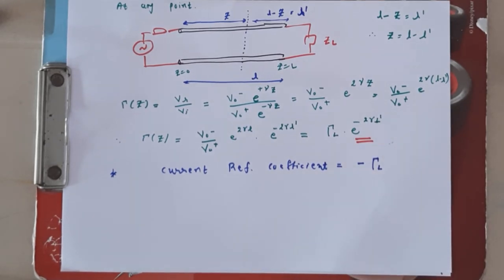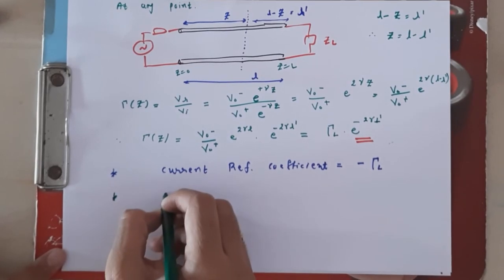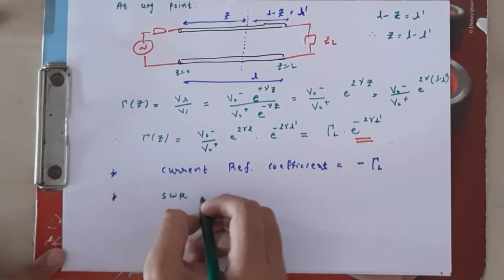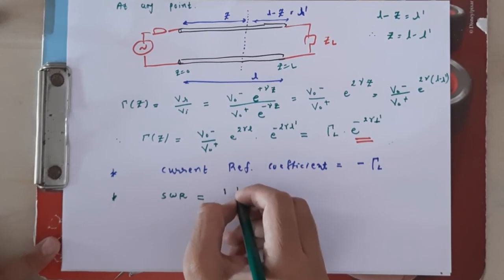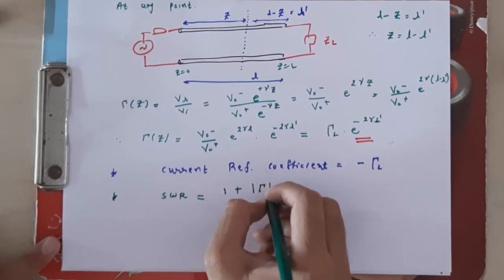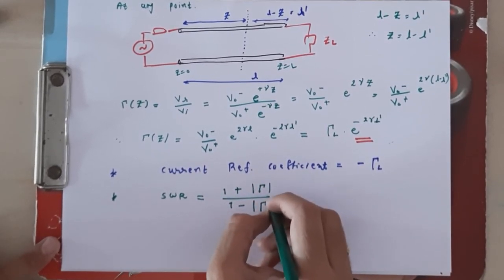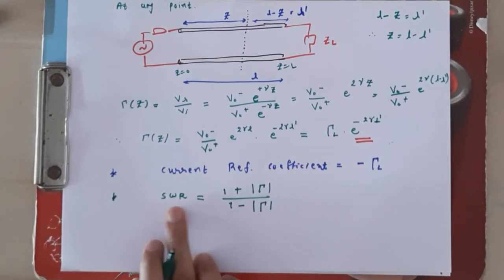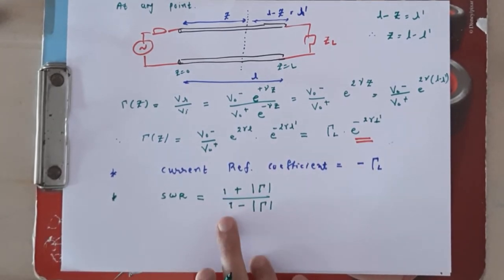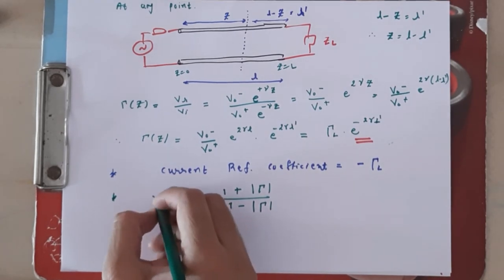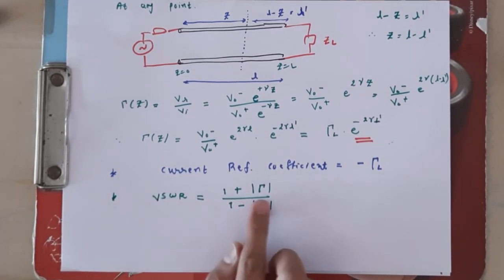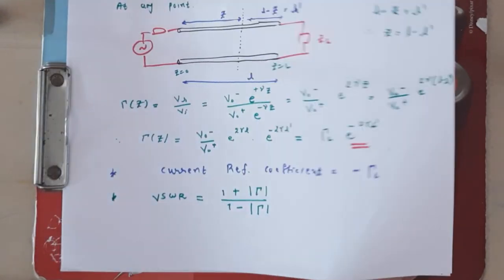Next is the standing wave ratio (SWR). We have already discussed this in the last chapter and derived the equation: SWR = (1 + |τ|)/(1 − |τ|). This is also known as VSWR — voltage standing wave ratio — where τ here is τ_L, the voltage reflection coefficient at the load.